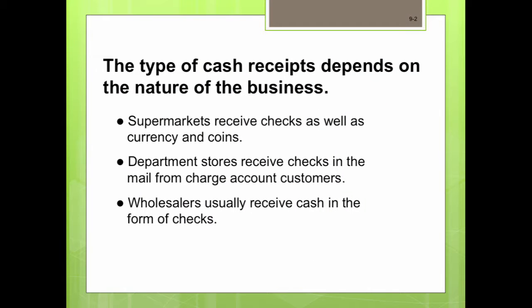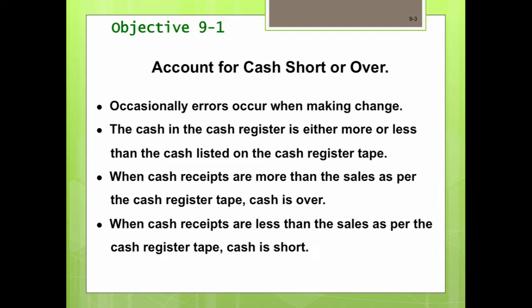A business must maintain an adequate cash flow. However, the type of cash receipts received depends on the nature of the business and how it is conducted. In accounting, when we refer to cash, we refer to currency, coins, checks, money orders, and funds on deposit in a bank. Cash receipts come in a variety of forms. Supermarkets may receive checks as well as currency and coins. Department stores receive checks in the mail from charge account customers in addition to currency and coins. Wholesalers usually receive cash in the form of checks.